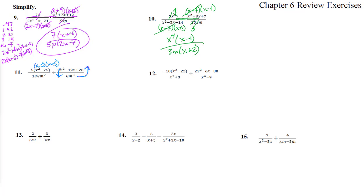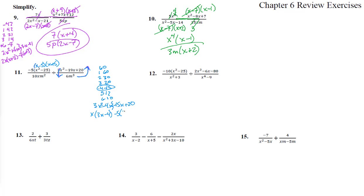The other trinomial we factor using AC method: 3 times 20 is 60. Factor pairs: 1 and 60, 2 and 30, 3 and 20, 4 and 15, 5 and 12, 6 and 10 — we need negative 4 and negative 15. Writing it out: 3x squared minus 4x minus 15x plus 20. Chainsaw: take x out to get 3x minus 4, take minus 5 out to get 3x minus 4. So it factors as x minus 5 times 3x minus 4.